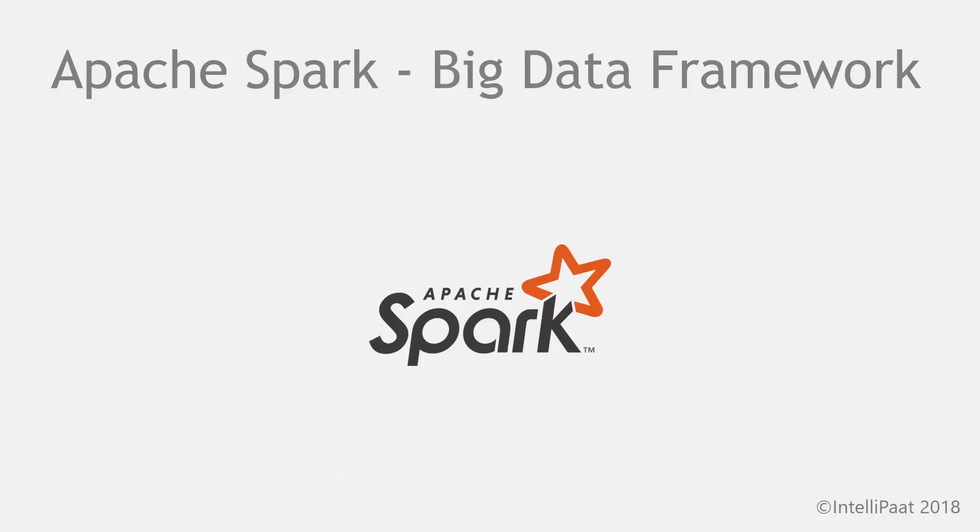Another emerging framework is Apache Spark, which is touted to be up to 100 times faster than MapReduce. Spark stores the data in the RAM, so iterative processing is fast and efficient. It also deploys direct acyclic graph or DAG for processing of data.